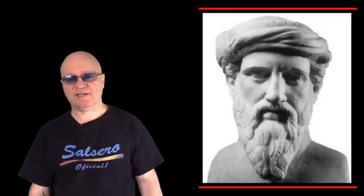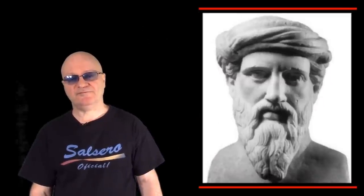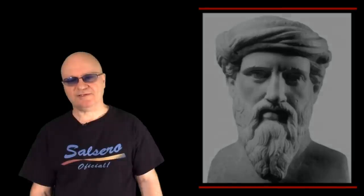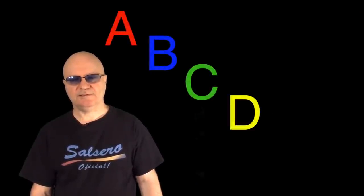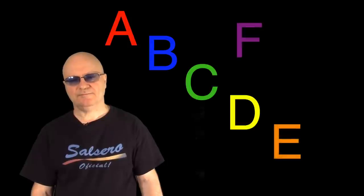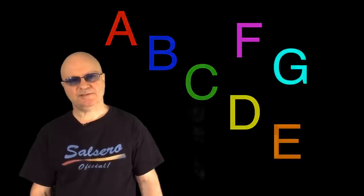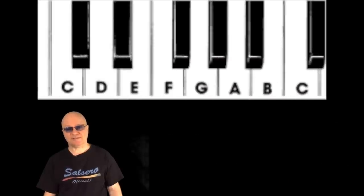The story goes that the Greek philosopher and mathematician Pythagoras, around the year 550 BC, was largely responsible for defining the notes A, B, C, D, E, F, and G, which became the full range of notes used in the ancient Greek musical system. They form the seven white notes we use on our piano today.